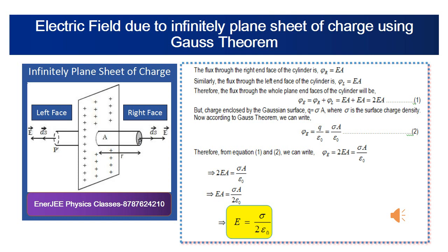Consider a thin infinite plane sheet of charge with uniform surface charge density σ. We want to determine the electric field at a point P, which is situated at a distance r from the infinite plane sheet of charge.